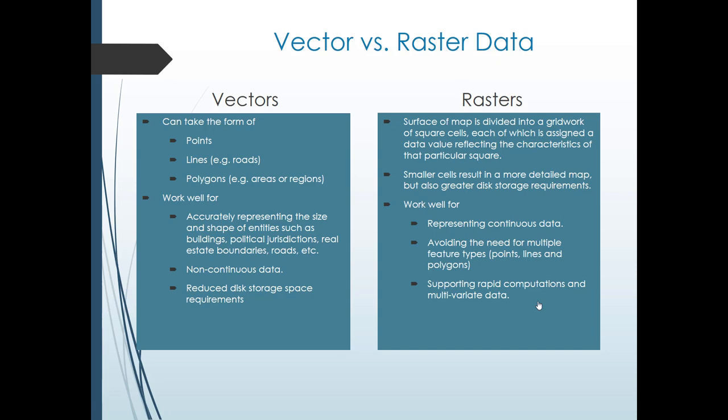Rasters are more like the pixels on your computer screen — a grid of little squares. The squares are colored, and those colors reflect the value of some underlying data for that particular square. Rasters give you a more detailed map but result in higher disk storage requirements. They're good for continuous data and for things that cannot clearly be defined as polygons — things without clear boundaries. They also support rapid computations and multivariate data.